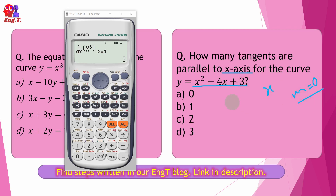We simply take the derivative of the function and set it equal to zero. The derivative of the value is very straightforward — we set it equal to zero.